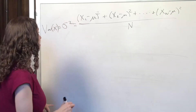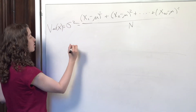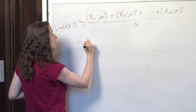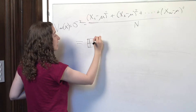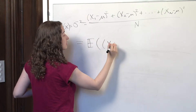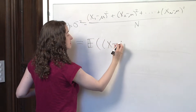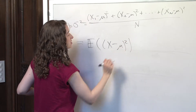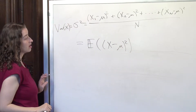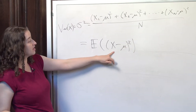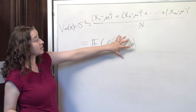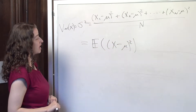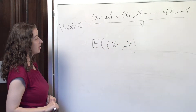That's what the expectation operator says. In other words, the variance, by definition, is equal to the expected value of x minus the expected value of x, squared — because the expectation operator, by definition, is adding up this quantity for each unit in the population and dividing by how many there are.